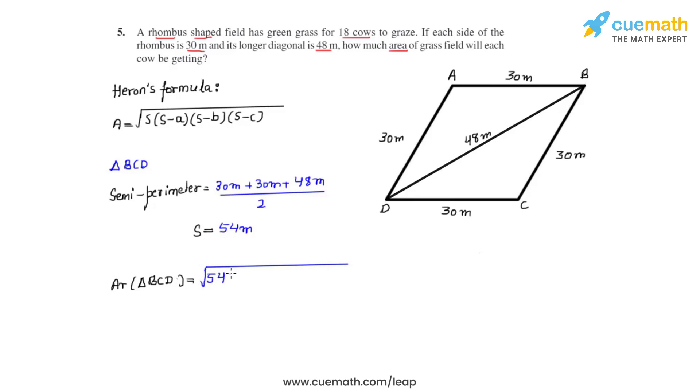So we write under root 54 times (54 minus 30) times (54 minus 30) times (54 minus 48) meter square. Further calculation comes under root 54 times 24 times 24 times 6 meter square.